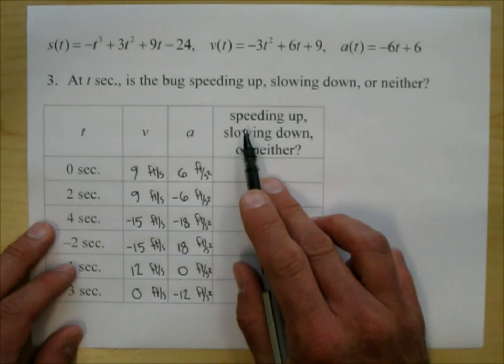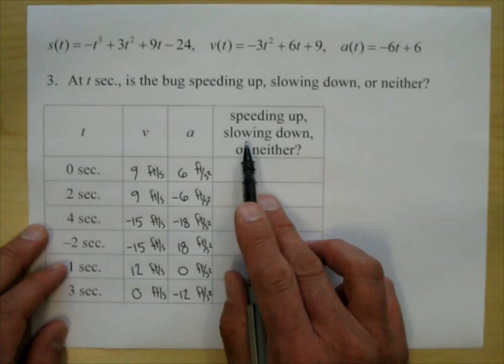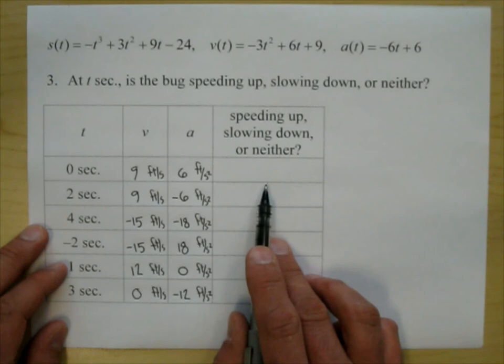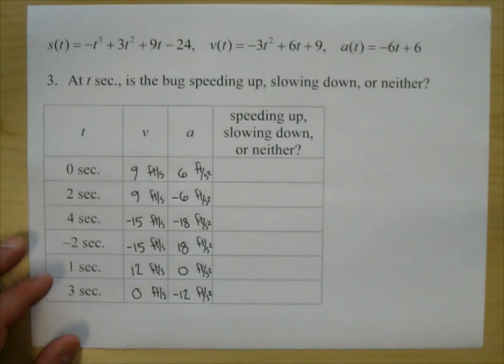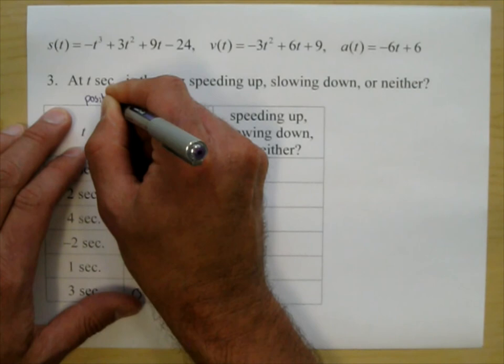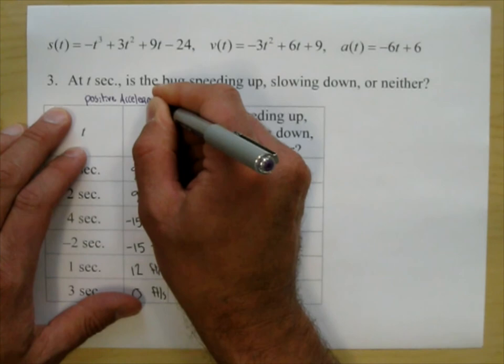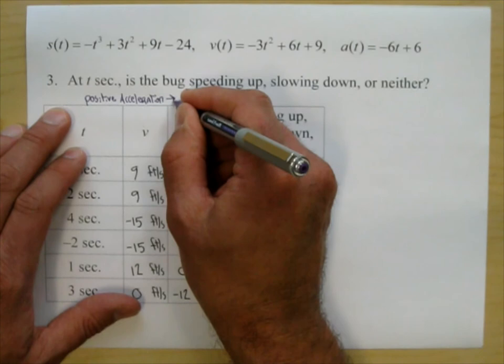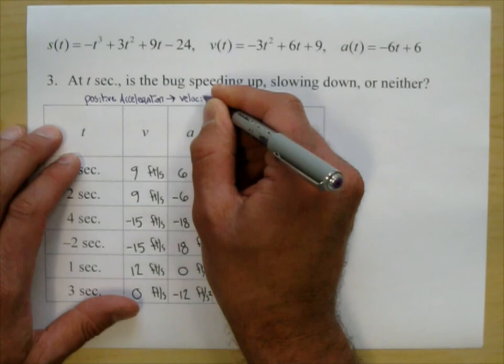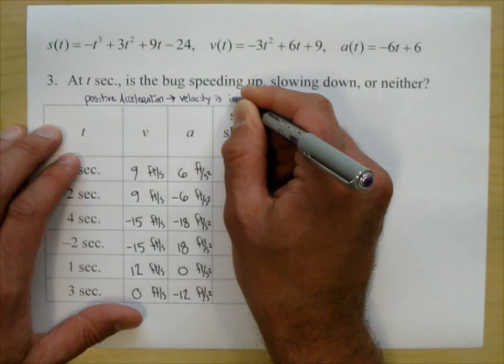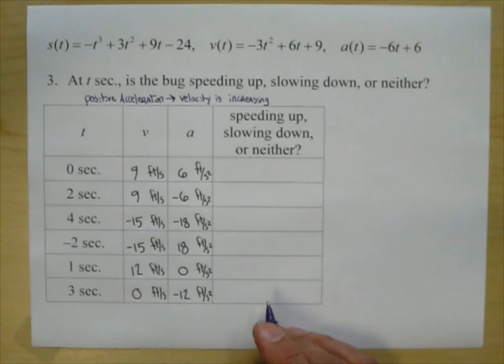Now they're asking at each time whether the bug is speeding up, slowing down, or neither. Let's talk about positive acceleration. Positive acceleration means it's the rate of change of the velocity — it means the velocity is increasing, it's getting greater.